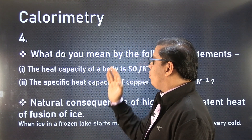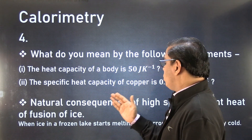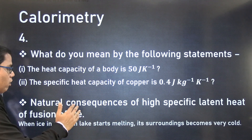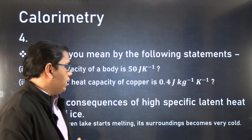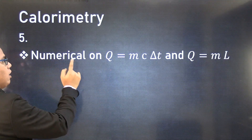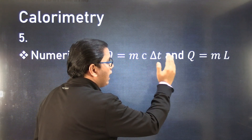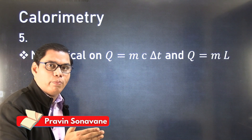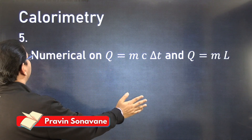Prediction number four: what do you mean by the natural consequences of the high specific latent heat of fusion of ice? Give reason: when ice in a frozen lake starts melting, its surroundings become very cold — learn this give-reason properly. The key numerical involves two formulae: MC delta T and ML for heat. This question is difficult yet very important and a sure-shot question. I am sure you have practiced these questions properly.